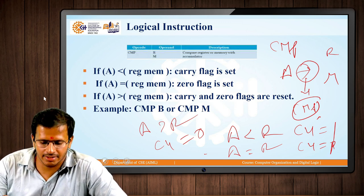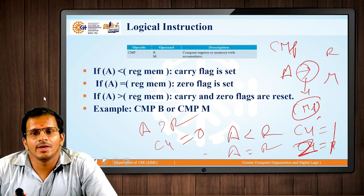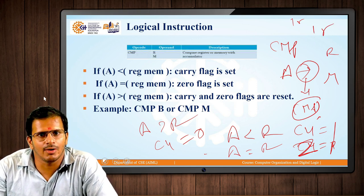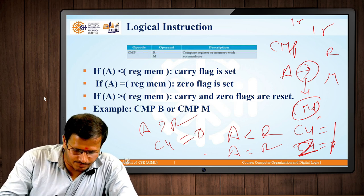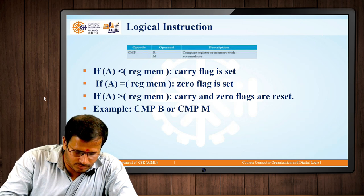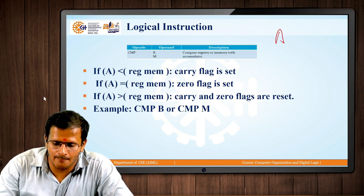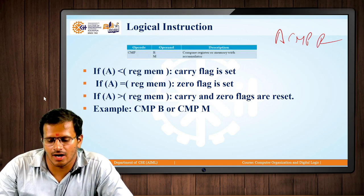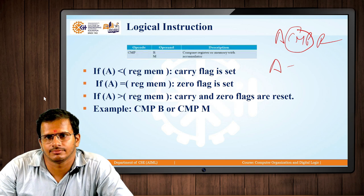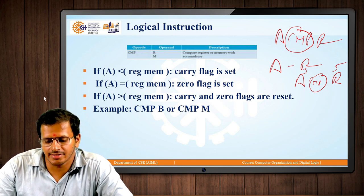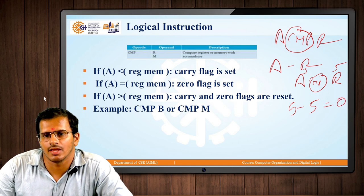When the accumulator content and register content are compared, the operation performs A minus R internally. When A and R values are the same — for example both are the same value — the subtraction result will be 0. That is why the Z bit (zero bit) of the flag register becomes 1 when the values are equal.